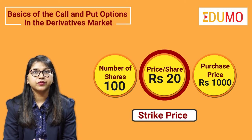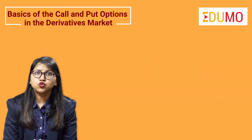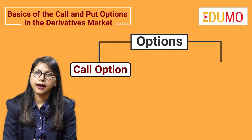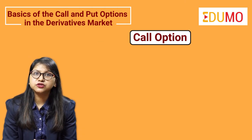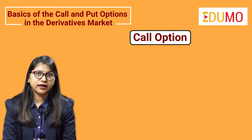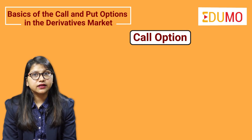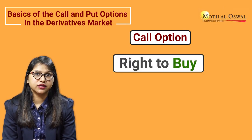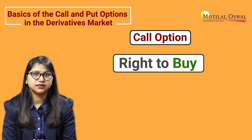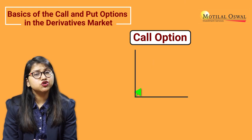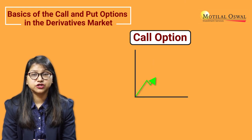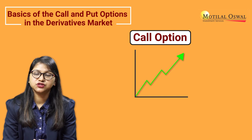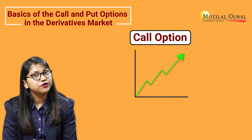There are two types of options available in the market: call and put options. A call option is the contract wherein we get the right to buy the underlying securities at a fixed price. As a buyer, we should buy a call option when we believe that the prices of the underlying assets will rise in the future.